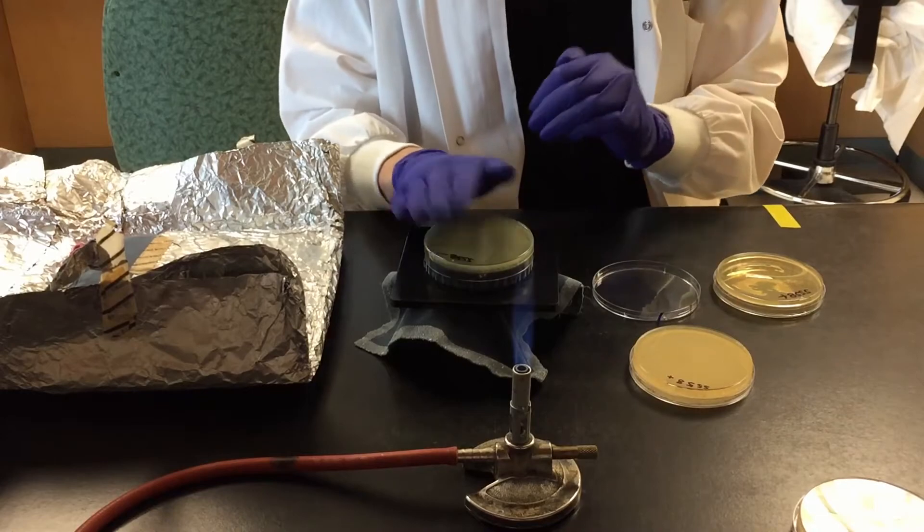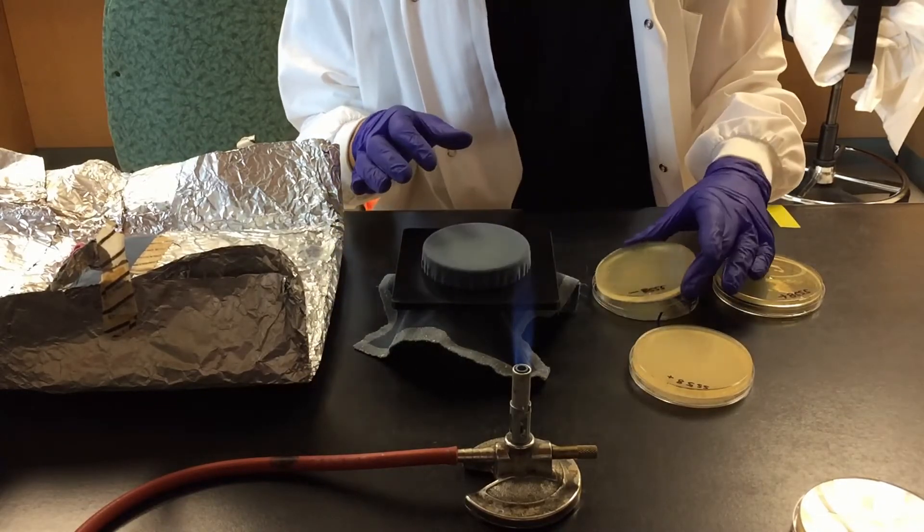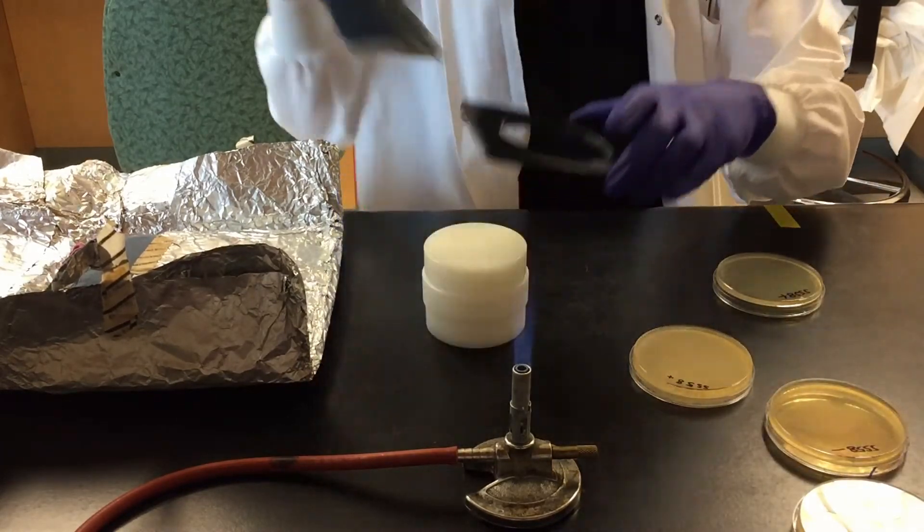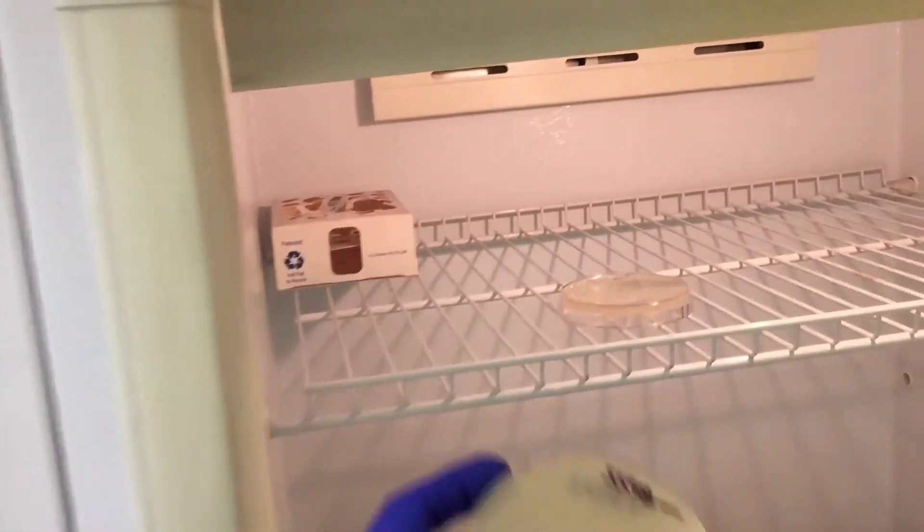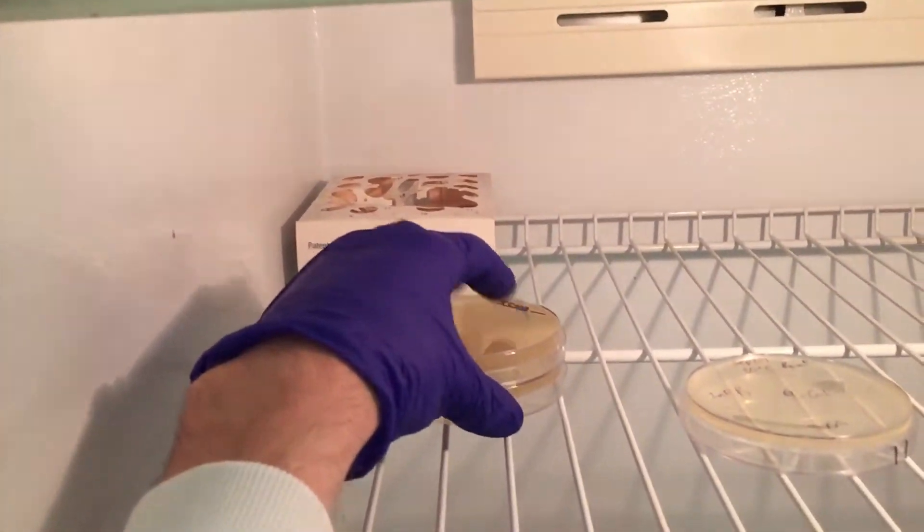Lightly press the new selection plate onto the cell covered felt. Incubate the new selection plates at 30 degrees for 1 to 2 days.